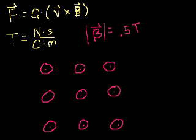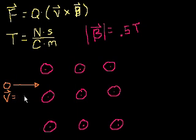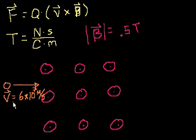Let's say I have some proton that comes speeding along. The velocity of the proton is equal to 6 times 10 to the seventh meters per second — about a fifth of the speed of light. We're in the relativistic realm, but we'll assume the mass hasn't increased significantly. So we have this proton going at a fifth of the speed of light, crossing through this magnetic field. The first question is: what is the magnitude and direction of the force on this proton from this magnetic field?